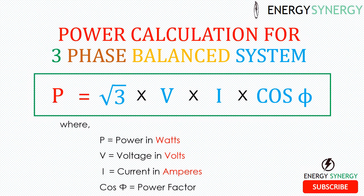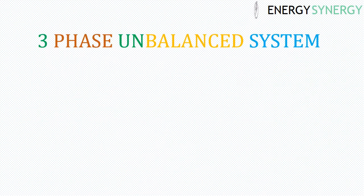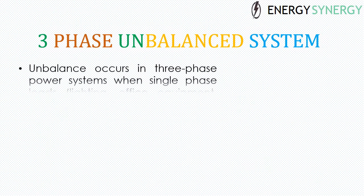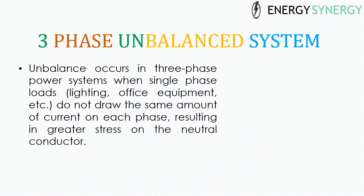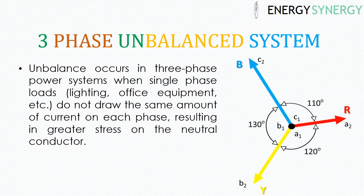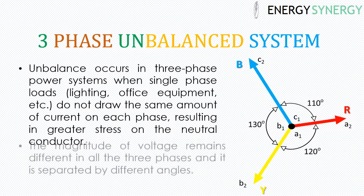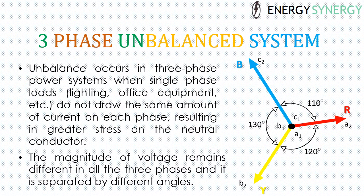Let's see what an unbalanced system is. Unbalance occurs in three-phase power systems when single-phase loads — like lighting, office equipment, etc. — do not draw the same amount of current on each phase, resulting in greater stress on the neutral conductor. The system is then said to be unbalanced. The phasor diagram shown is showing an unbalanced power system, where the magnitude of voltage remains different in all three phases and they are separated by different angles, unlike a balanced system.